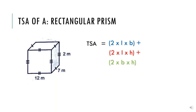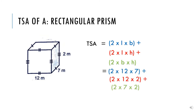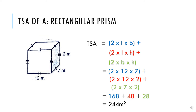For example, we substitute the values of length, breadth, and height into the formula. We can take the length as 12 meters, the breadth as 7 meters, and the height as 2 meters. All the units are in the same unit, so we can substitute them into the formula: 2 times 12 times 7, plus 2 times 12 times 2, plus 2 times 7 times 2. You'll get a final answer of 244 meters squared. You can calculate those values separately or type the whole formula into your calculator.